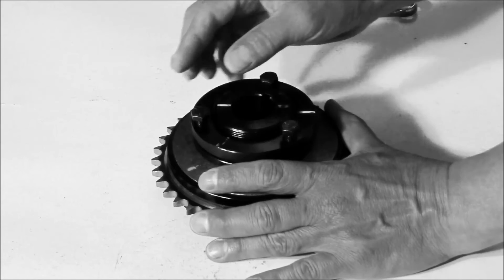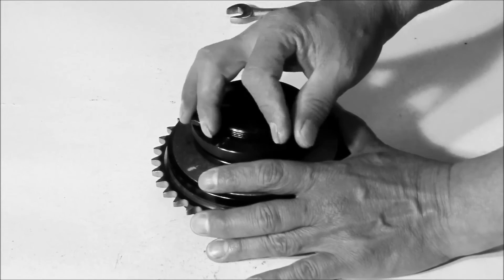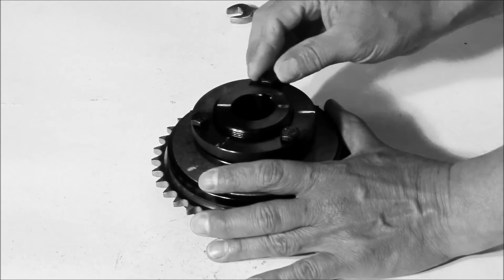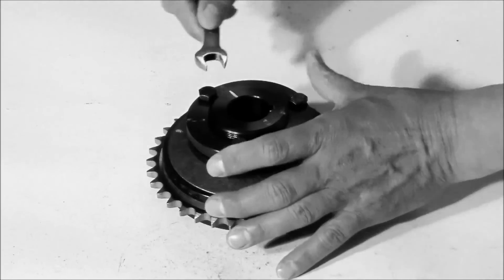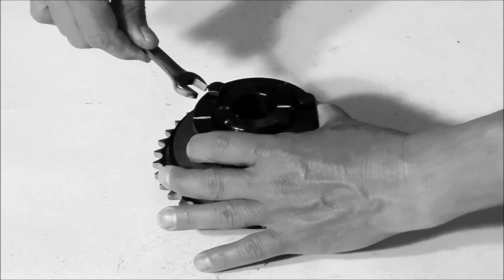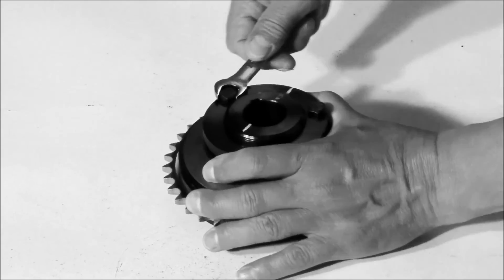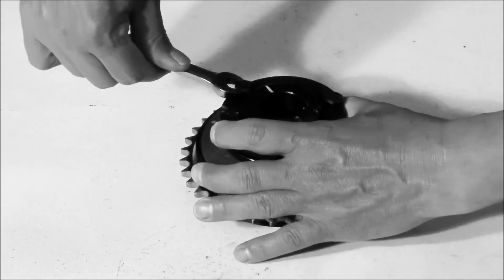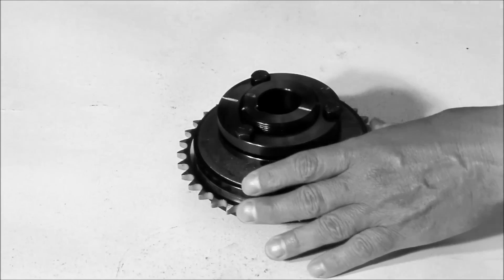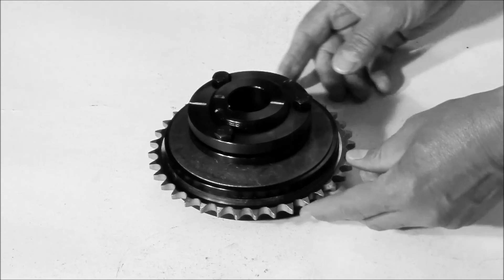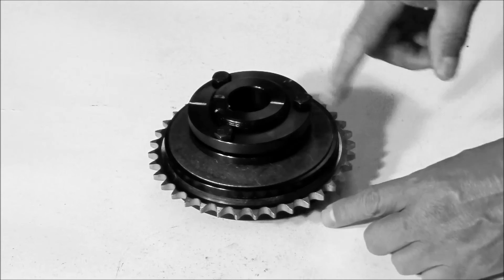And then we're going to tighten down the adjusting nut screws. And then take a half inch wrench and by alternating on each one, bottom those screws all the way out. And at that tension now it will take 90 foot pounds of torque before that sprocket starts to slide inside that brake.